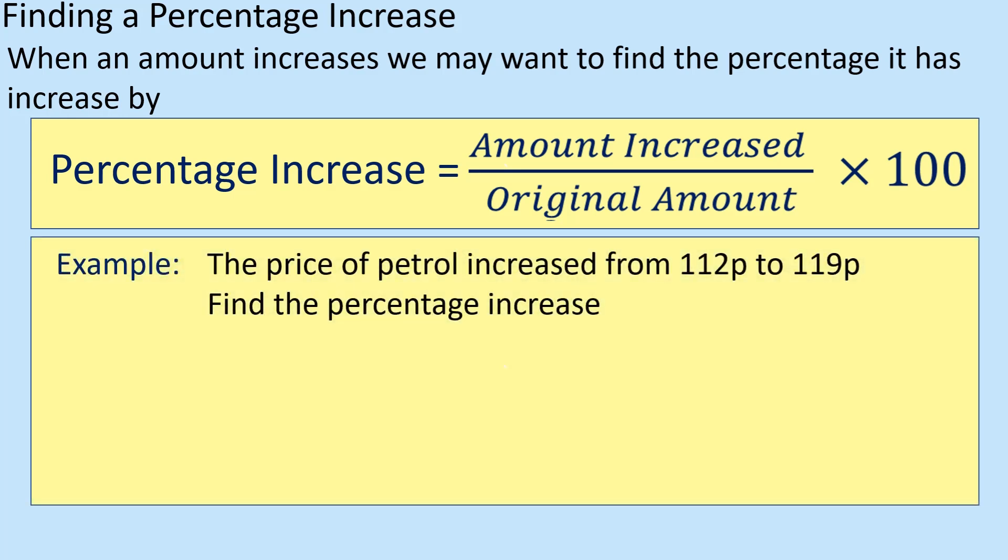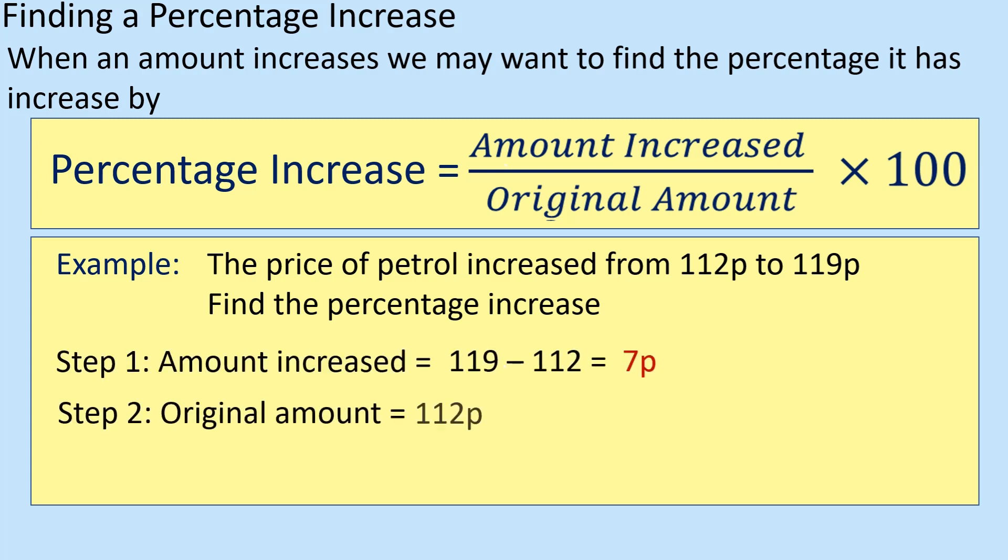Alright, so if a petrol price increased from 112 to 119, find the percentage increase, well, the amount it's gone up by is 7p. So it's going to be 7 out of 112, so 7 divided by 112, times by 100. Alright, so 7, if you can get there, 7 divided by 112, times by 100.